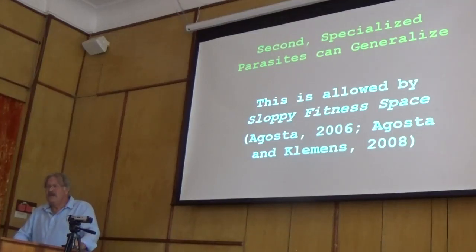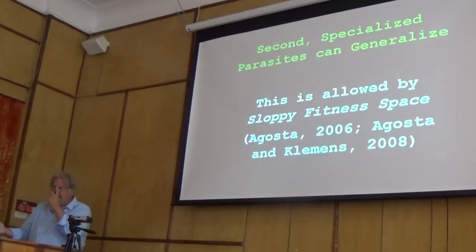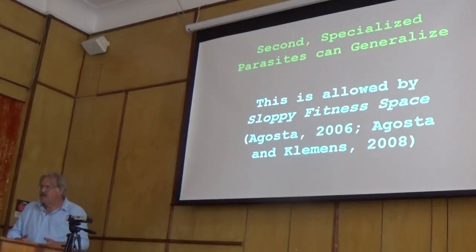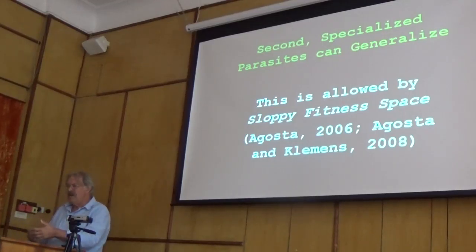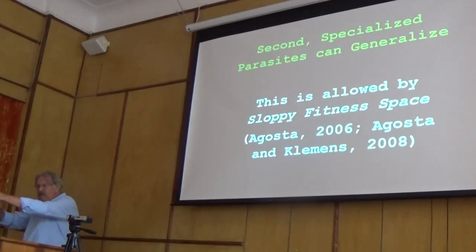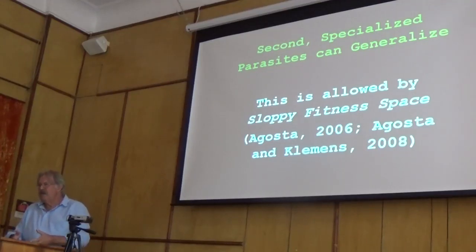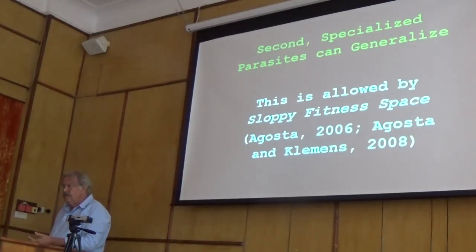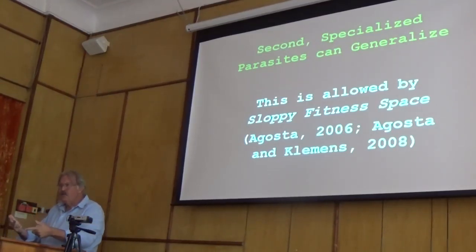Second, there is the issue of how some specialists, how specialized species can generalize. It's not only a situation in which generalized species become specialized and then that's it. There is a mechanism whereby highly specialized species can generalize themselves. And that's allowed by what Sal Agustas calls sloppy fitness space — the recognition that fitness space, or all of the dimensions on this planet where a given species of any kind could exist, is in fact sloppy. Most of the potential viable fitness space for every species on this planet is unoccupied by the species.